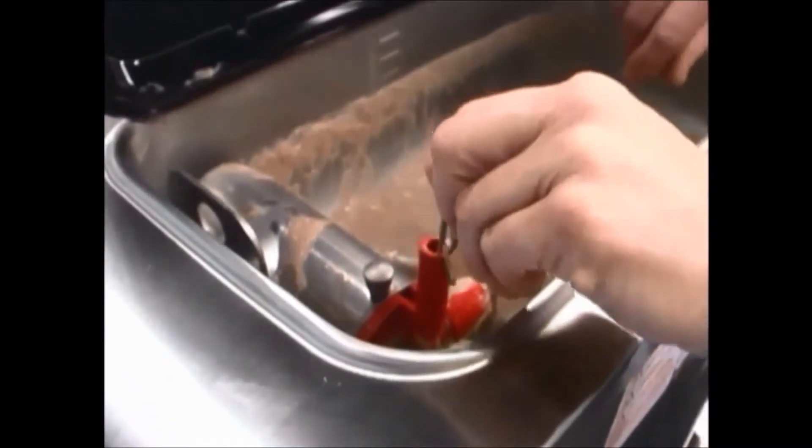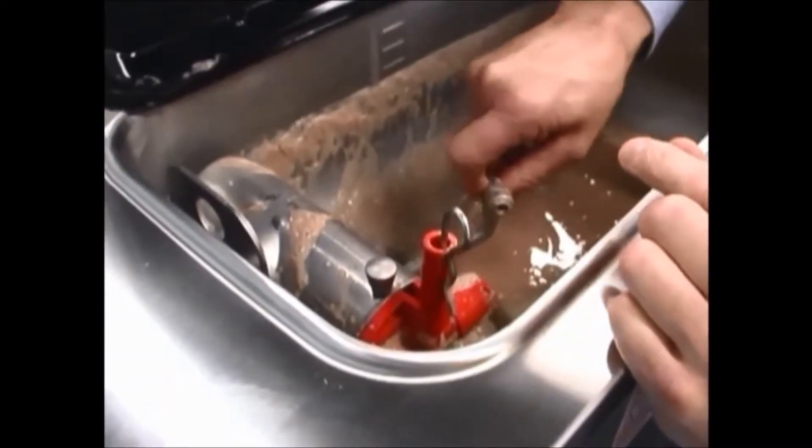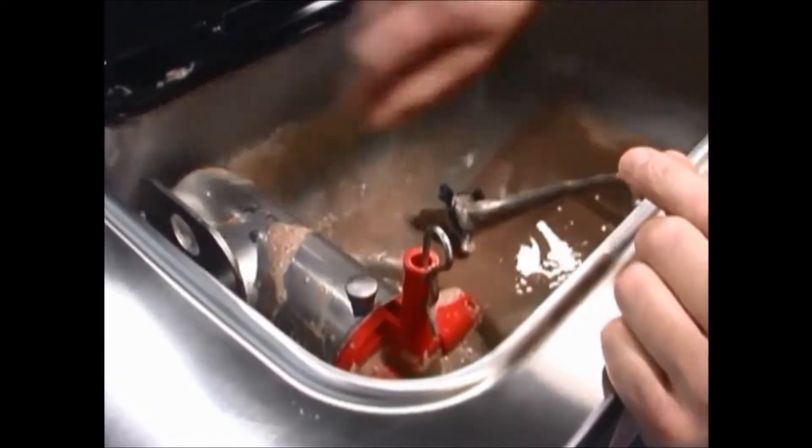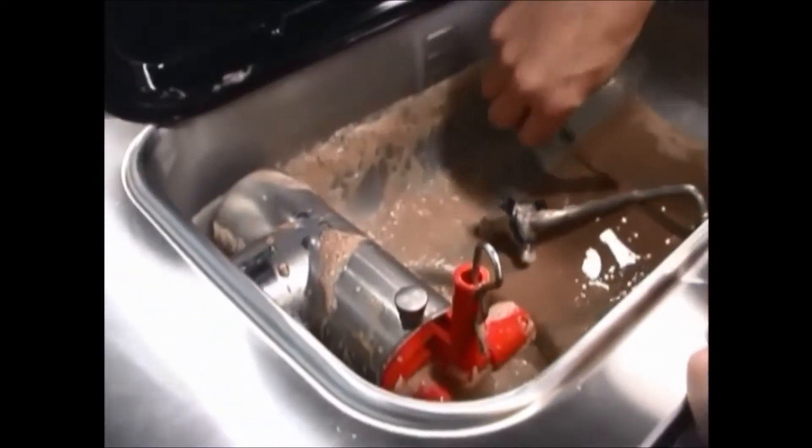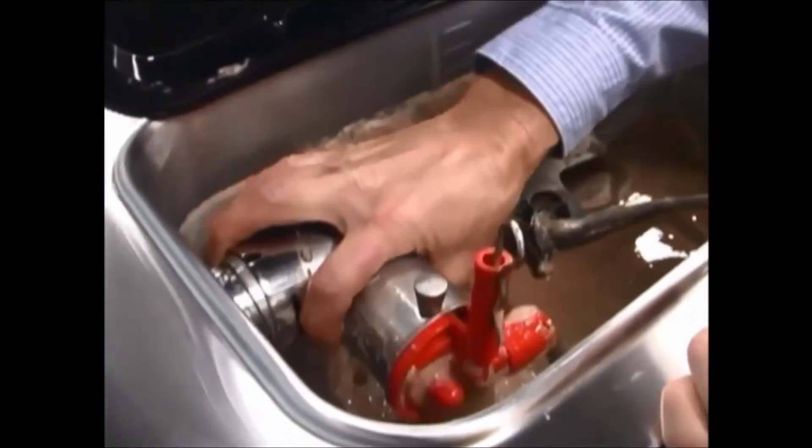Remove the cotter pin, mix feed tube, pump clip, and the assembled air mix pump. Repeat these steps for the other side of the machine.